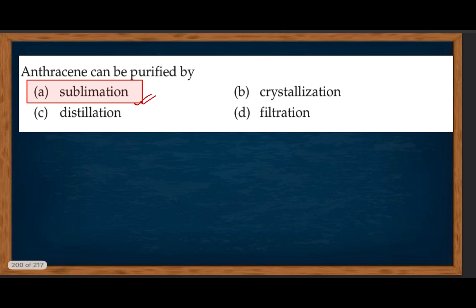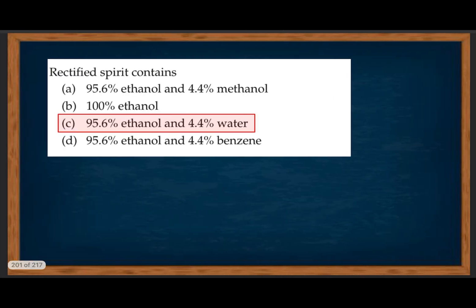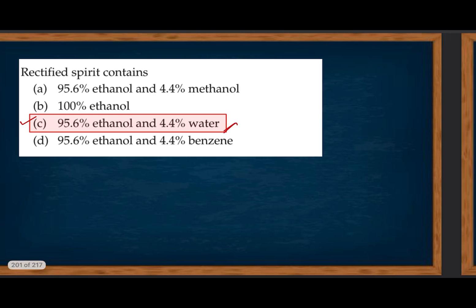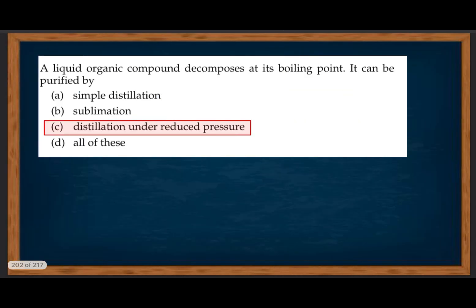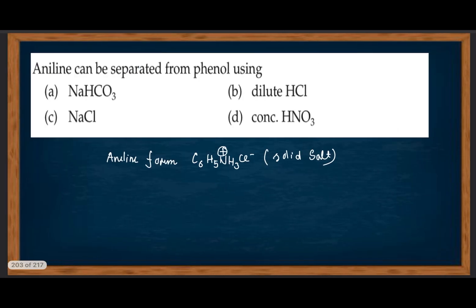Rectified spirit contains 95.6% ethanol and 4.4% water. A liquid organic compound that decomposes at its boiling point can be purified by distillation under reduced pressure. Aniline can be separated from phenol using dilute HCl — aniline forms a salt with dilute HCl.